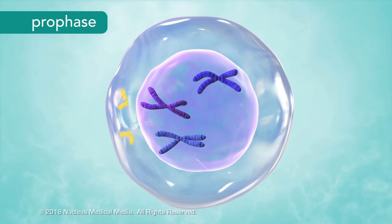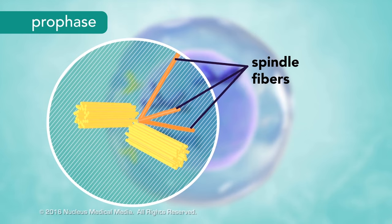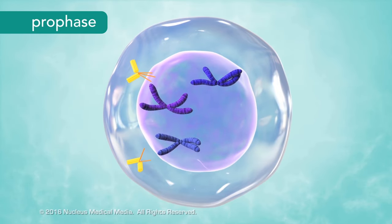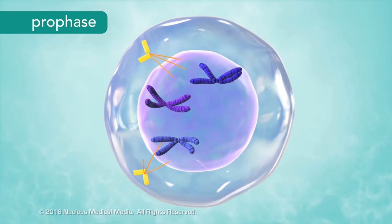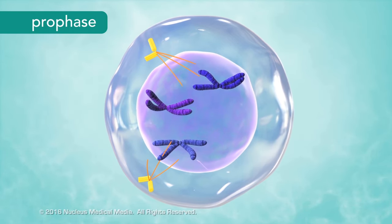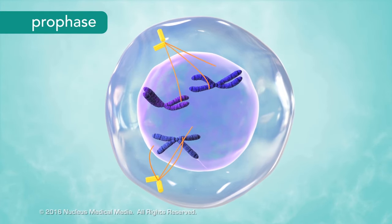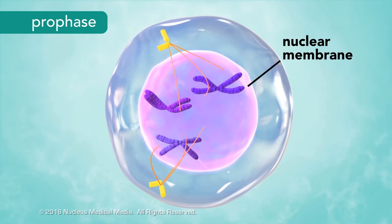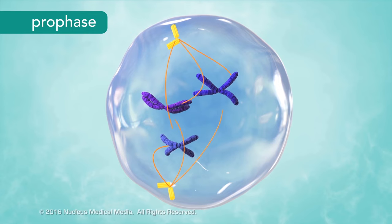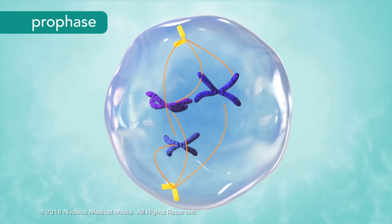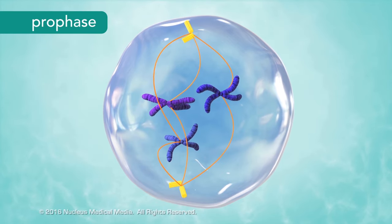Meanwhile, in the cytoplasm, microtubules known as spindle fibers begin to fan out from two sets of paired structures called centrioles. The spindle fibers elongate as the centrioles begin moving to opposite sides, or poles, of the cell. While this is happening, the nuclear membrane surrounding the nucleus disappears. Now that chromosomes are no longer separated from the cytoplasm, the opposite ends of the spindle fibers can attach to the centromeres.